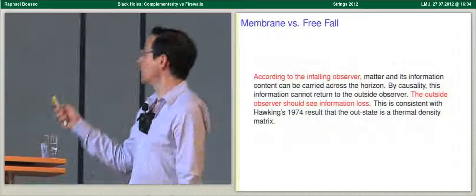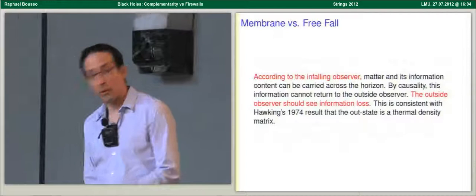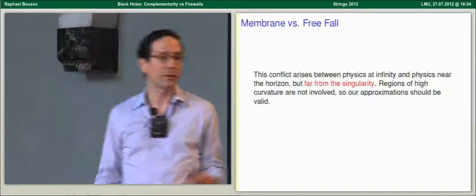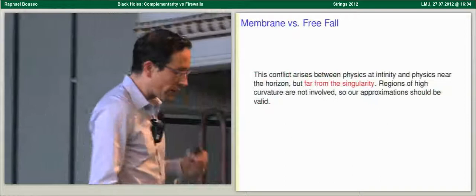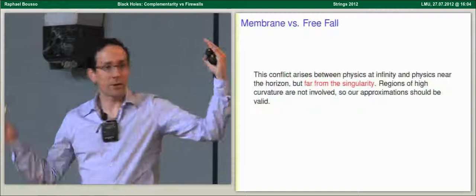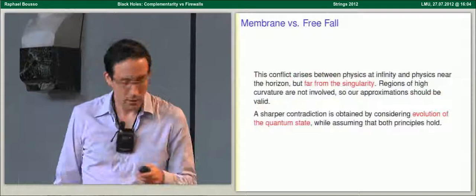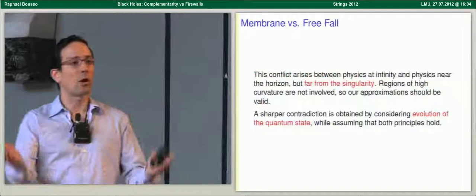This hand-waving story is much more convincingly supported by Hawking's beautiful calculation, which shows that the black hole apparently takes a pure state to a density matrix. These guys could argue forever, except the infalling observer is inside the black hole, and the outside guy has to wait for all the Hawking radiation. All the apparent conflicts I'm going to talk about arise in a regime where we think we have control — not near the singularity. Think of a black hole a billion light years across. It's a really robust contradiction.